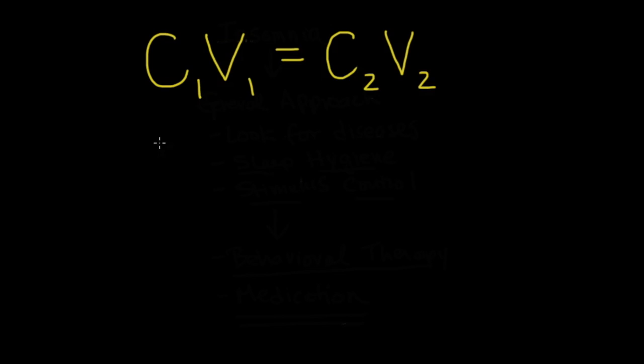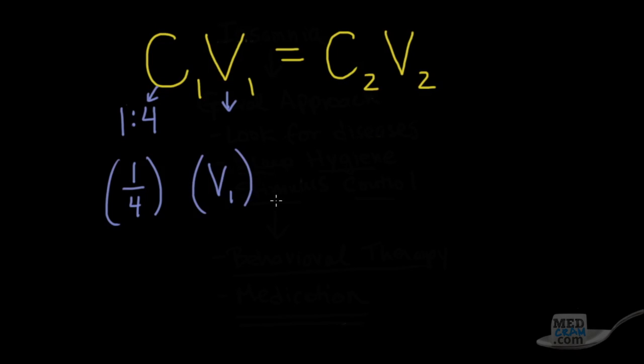So we're starting out with a 1 to 4 solution. So remember, 1 to 4, we said, can be written just like 1 divided by 4, and that's the C coming down here. The V is what we're looking for. We're looking for how much volume is going to be necessary, and we'll put that right here and continue that as the variable. Now, what's staying the same here is the solute. What's going to change is the concentration and the volume. So what's the new concentration? The new concentration that they're looking for is a 1 to 20 solution. But as we've already said, that can be written as 1 divided by 20.